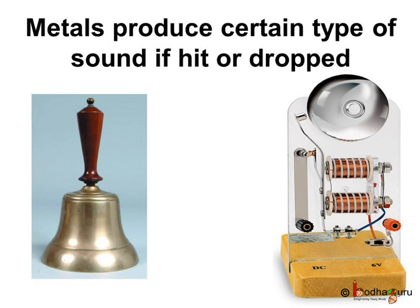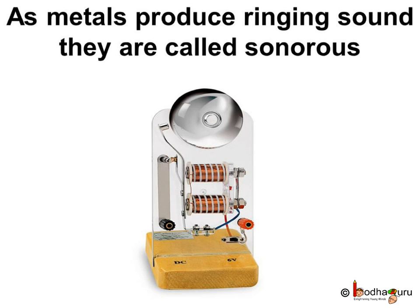Have you ever noticed the difference in sound when hitting a metal versus a piece of coal? Have you seen electric bells or ordinary bells? A bell is made of metals like aluminum, copper, iron, etc. Metals produce a ringing sound if you hit them or drop them, so they are said to be sonorous. Non-metals don't produce that kind of sound.